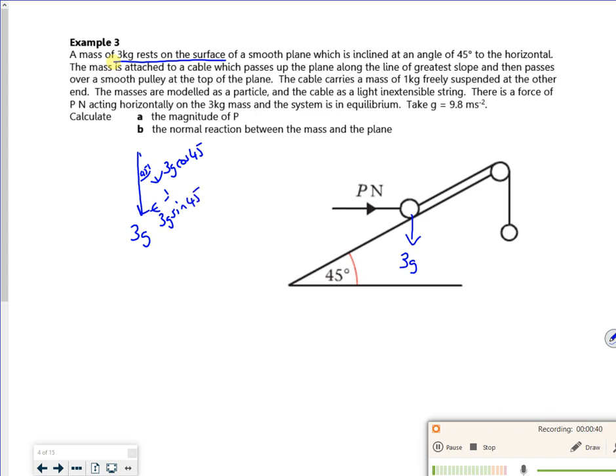So then it says the mass is attached to a cable which passes up a plane along the line of greater slopes or parallel to it and then passes over a smooth pulley so there's no friction. The masses are modeled as a particle. The cable is light and inextensible. So that's an assumption if they ask for an assumption that it's not doing. There is a force of P acting on the 3kg mass and the system is in equilibrium.